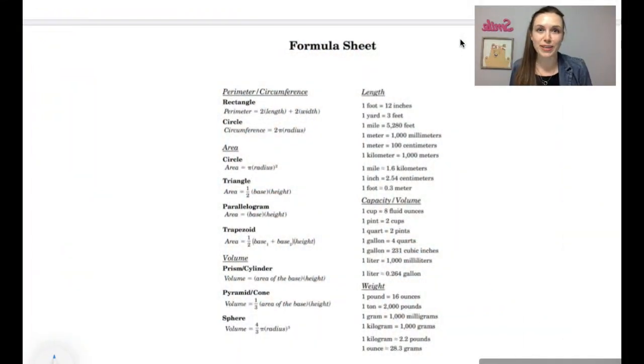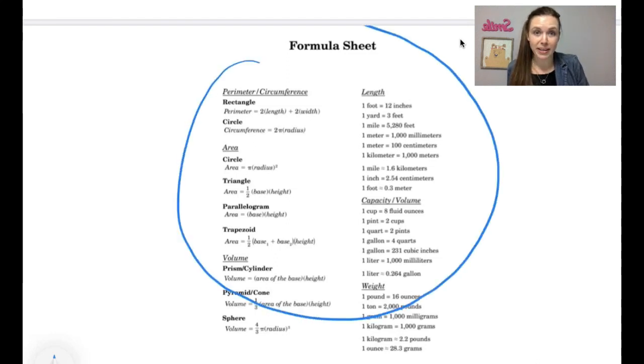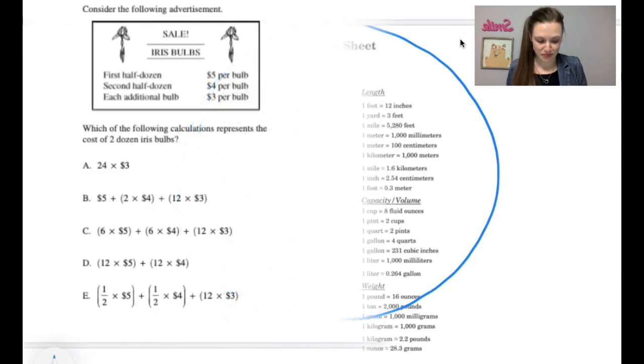The test that we are going over here is a HiSET free practice test, but it's very similar to the GED or the TASC. Now the first thing you want to really make sure is that you are familiar with the formula sheet. This is the formula sheet for the HiSET test and notice here it has perimeter, circumference, area, volume, length, capacity, and weight. So it honestly has quite a bit here. Definitely make sure that you're familiar with whatever formula sheet you're going to be using.